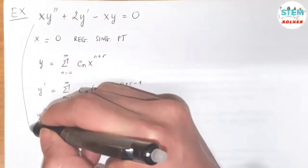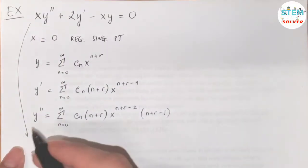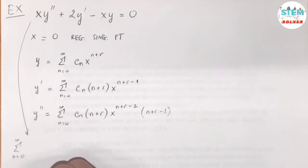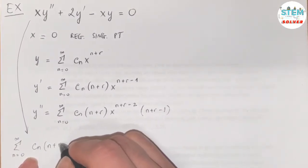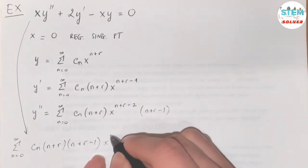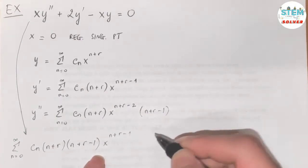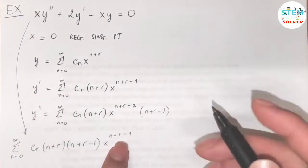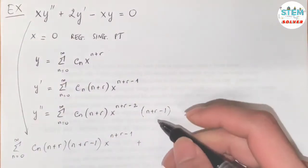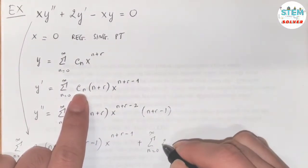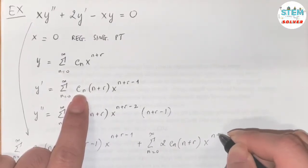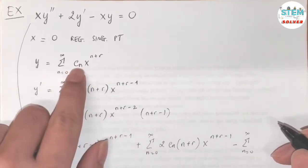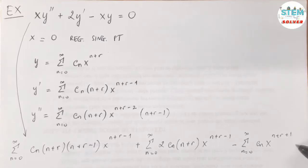Now plug these into the differential equation. We have x times y double-prime, which gives a power series from 0 to infinity: c_n(n+r)(n+r-1) x to the (n+r-1), since x multiplies x to the (n+r-2). Plus 2y prime, which is the power series from 0 to infinity: 2c_n(n+r) x to the (n+r-1). Minus x times y, which is the power series from 0 to infinity: c_n x to the (n+r+1). All equal to zero.